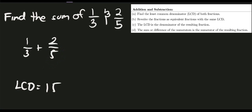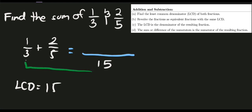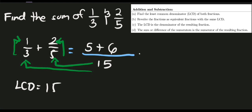Step two: rewrite the fractions as equivalent fractions with the same LCD of 15. Divide the LCD by the first denominator: 15 divided by 3 equals 5, then multiply by the numerator: 5 times 1 equals 5. Do the same for the second fraction: 15 divided by 5 equals 3, and 3 times 2 equals 6. So we have 5 plus 6, which simplifies to 11 over 15.